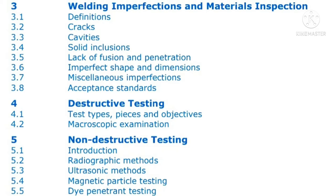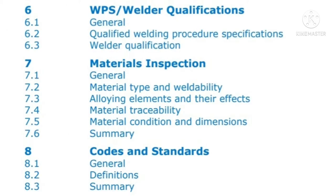The sixth topic is WPS and welder qualification, where we look at welding procedure specifications and welder qualification. The seventh is material inspection, covering material types, weldability, alloying elements and their effects, material traceability, and a summary. The eighth is codes and standards, covering what a code is and the difference between codes and standards.